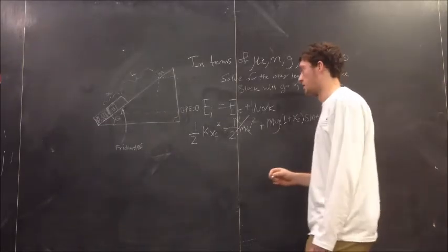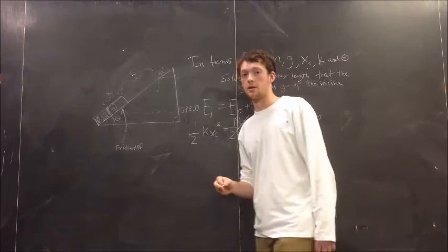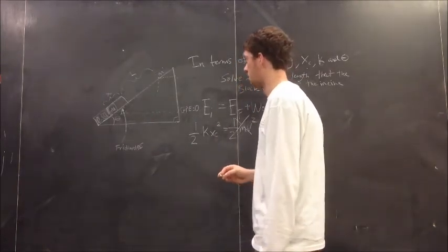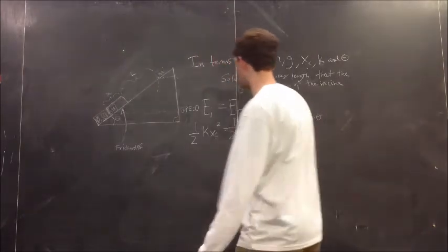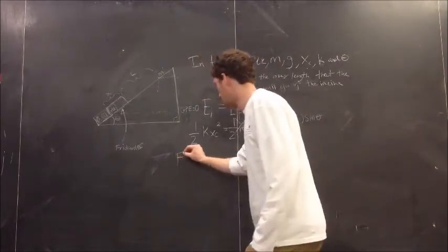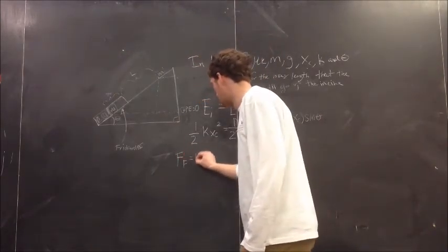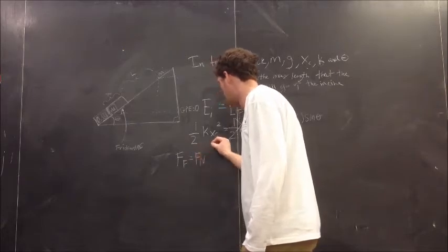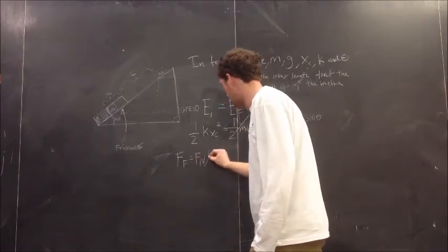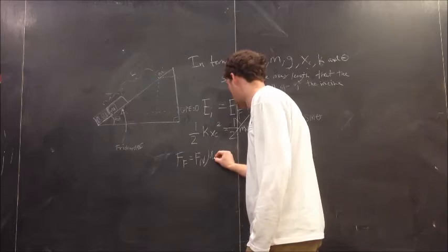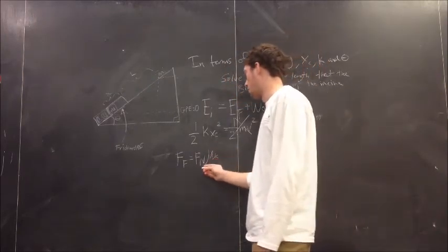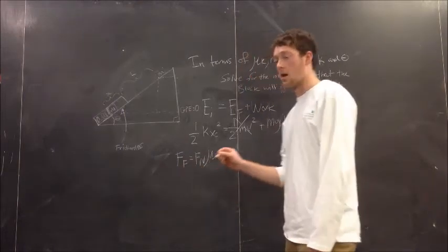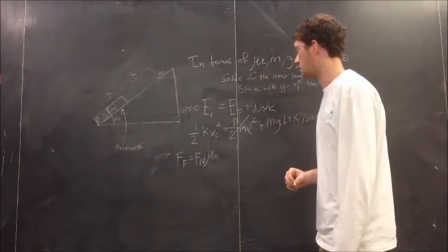Also, you have to consider the energy loss to friction. In order to find the force of friction, it's equal to the normal force times the coefficient of kinetic friction. In order to find the normal force and the force of friction, we need to draw a free-body diagram.